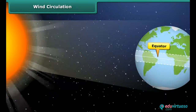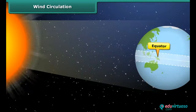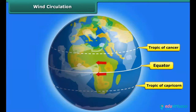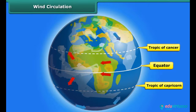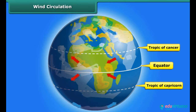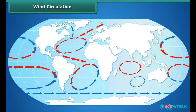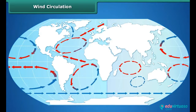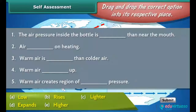The equator is the region which receives maximum heat from the sun compared to the polar regions. The air in these regions gets warm, the warmer air rises up, and the colder air coming from the polar regions moves in to fill the empty space. This is how wind circulation is set up from the poles to the warmer latitudes.